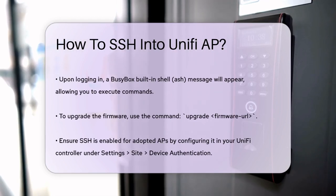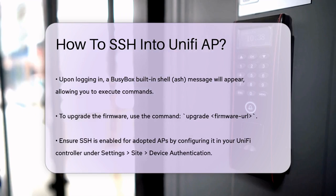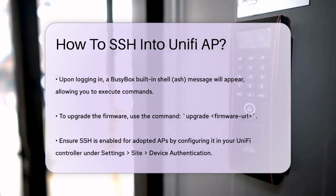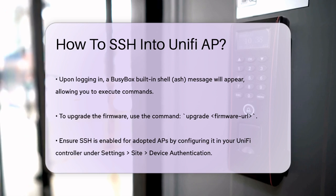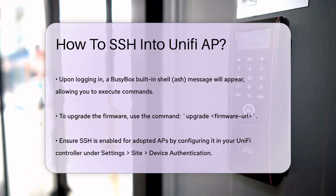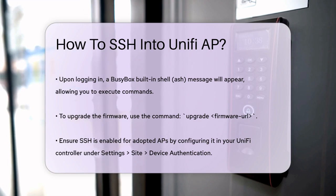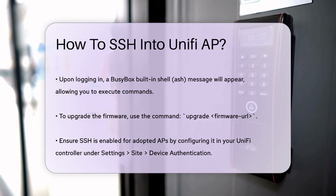Once you're logged in, you'll see a BusyBox built-in shell ASH message. Here, you can perform various tasks such as upgrading the firmware by running a command like: upgrade https://dl.ubnt.com/firmwareflash/u7pgu.3.28.13611/qca956x.v4.2.8.11361.28.3309.bin if you need to update the firmware.